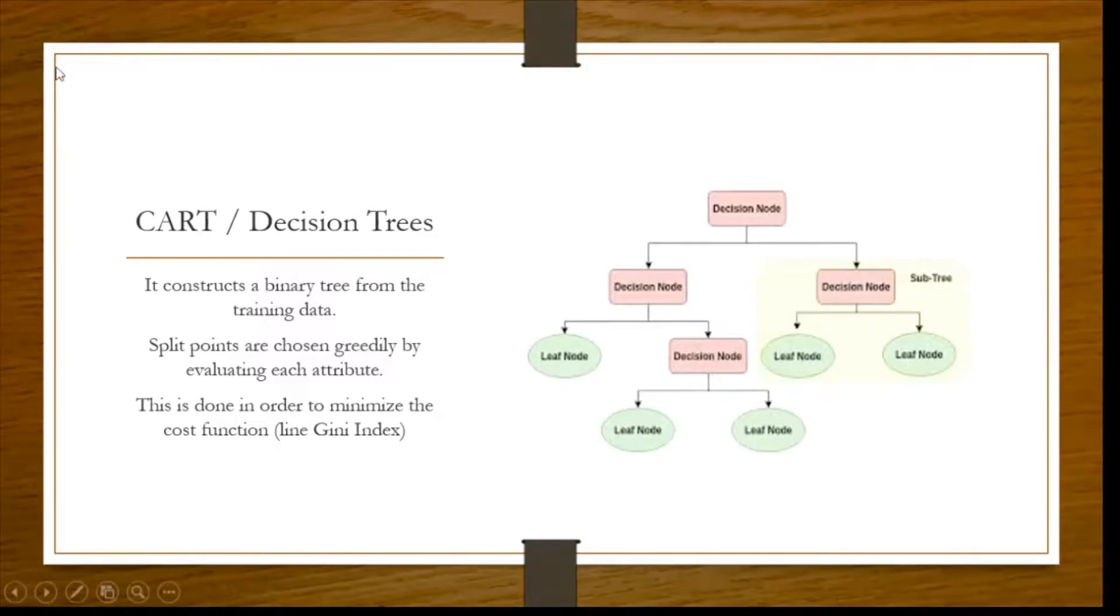Next is your CART or classification and regression tree. So this can be used with both classification and regression algorithms or decision trees. What happens is this constructs a binary tree from the training data. So you have a decision node from that they will be split into two different nodes. Now how do you split it? This is split point. They are being chosen greedily by evaluating the attributes. And why it is called greedy? Because it gives you the minimum cost, like Gini index.